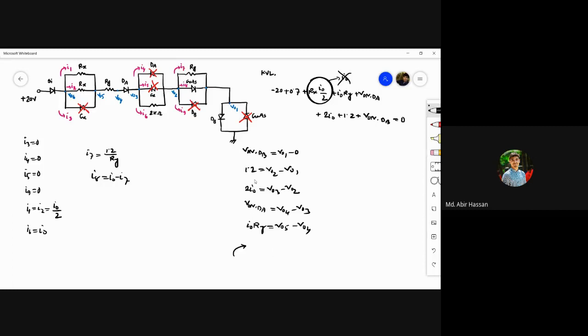i0 by 2 times Rx equals V06 minus V05. So V06 is obviously 19.3 volts. This is the complete solution for V06.